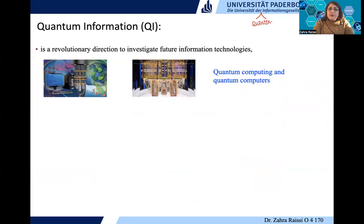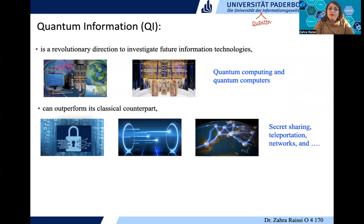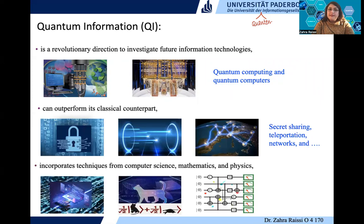In general, quantum information is a revolutionary direction to investigate future information technologies. We want to study and build quantum computers. Quantum information can also outperform its classical counterpart — we can have quantum secret sharing, teleportation of many-body systems and multiple particles simultaneously, and quantum networks. This area is related to many fields like computer science, mathematics, and physics.